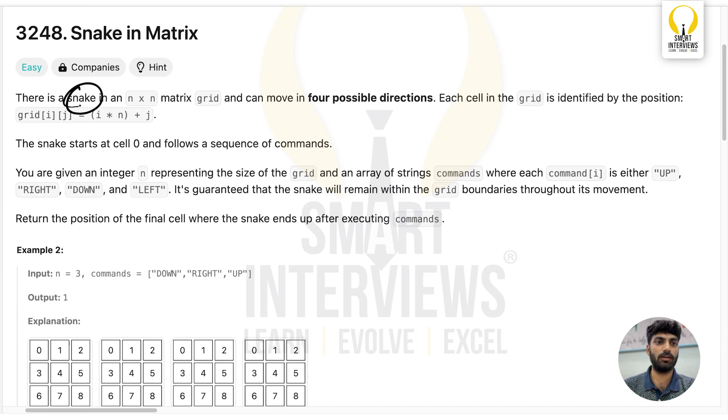The problem states there is a snake in an n×n matrix grid that can move in four possible directions. If it is at any cell, it can move either left, right, up, or down. Each cell in the grid is identified by its position.